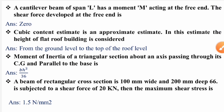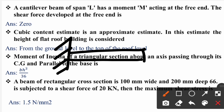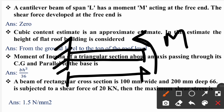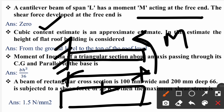Next question: A cantilever beam of span L has a moment M acting at the free end. What is the shear force developed at the free end? The correct answer is zero at the free end. When a moment M is acting at the free end of a cantilever beam, the shear force at the free end is zero, and the bending moment diagram will be rectangular.